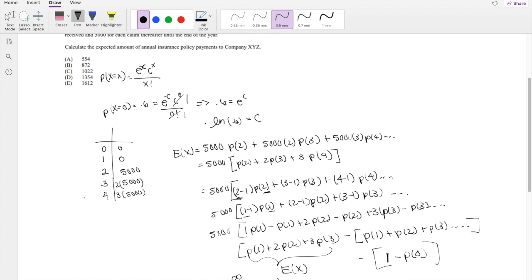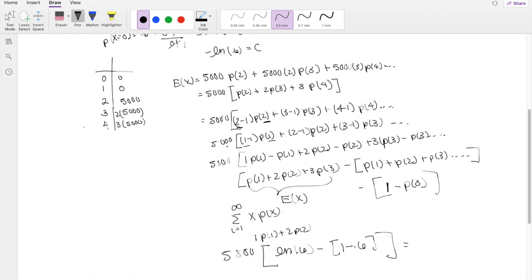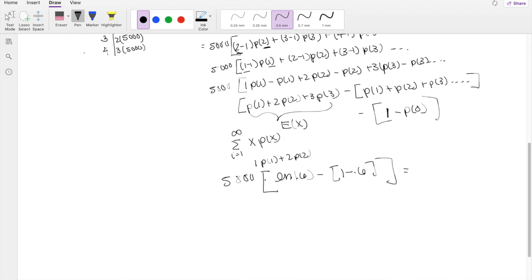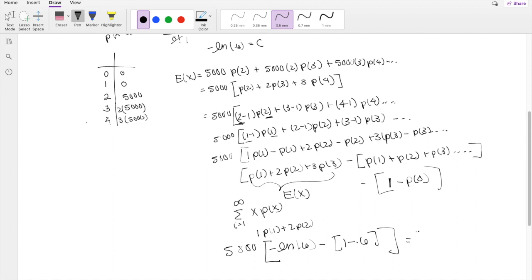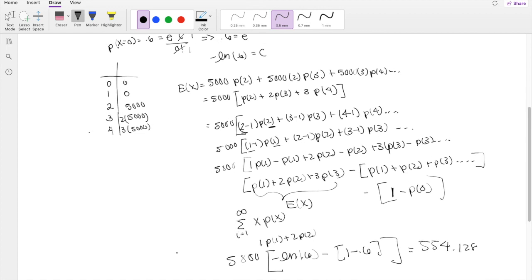0.6. Oh wait, I forgot a little negative sign here. Hi guys, what am I going to do? Okay, negative sign there. So this is going to be negative natural log of 0.6. So this is equal to 554.128, which is our answer A.